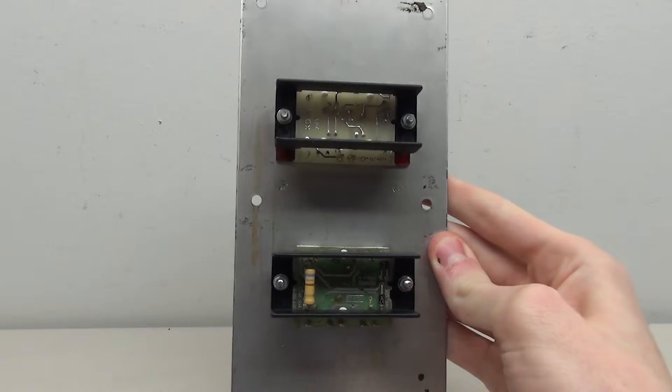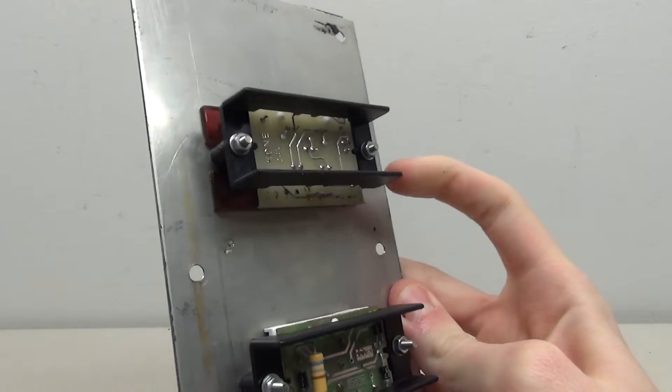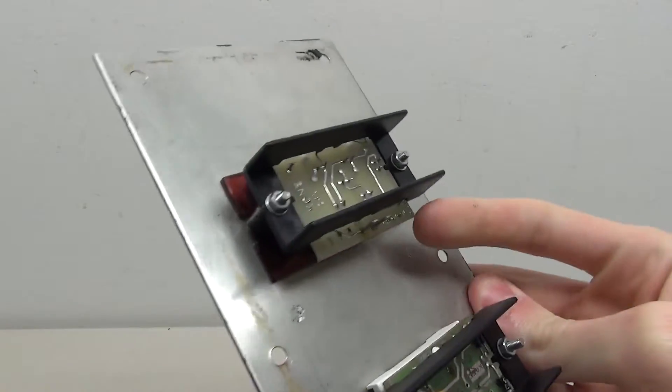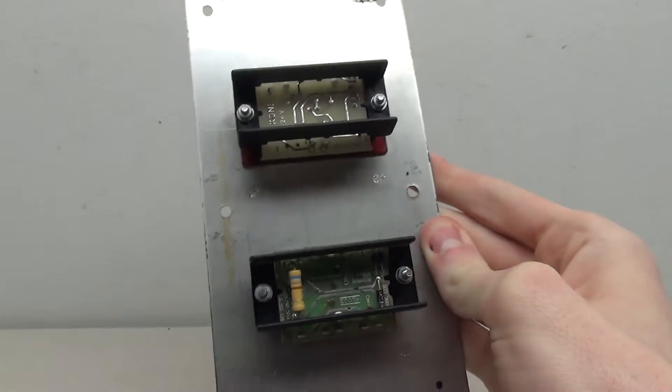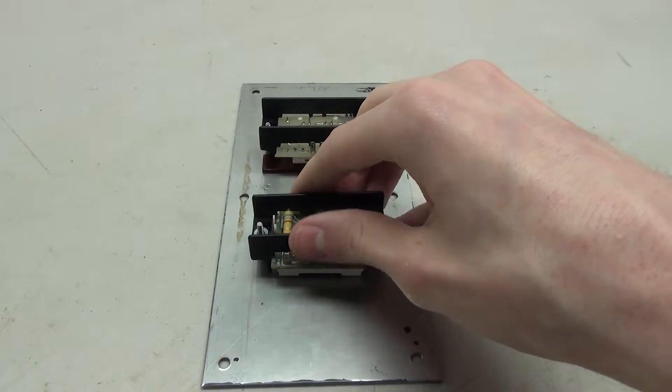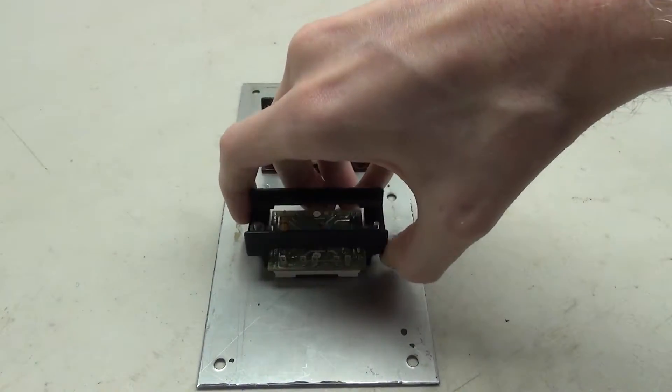Now if we turn it to the back, you see there's not a whole lot here to see. We've got two of these kind of black brackets that hold the circuit boards down, and that's pretty much all we can see. So in order to take a closer look at this button, we need to take these black brackets off. Once you take the little nuts off on either side, these little black brackets can come off.